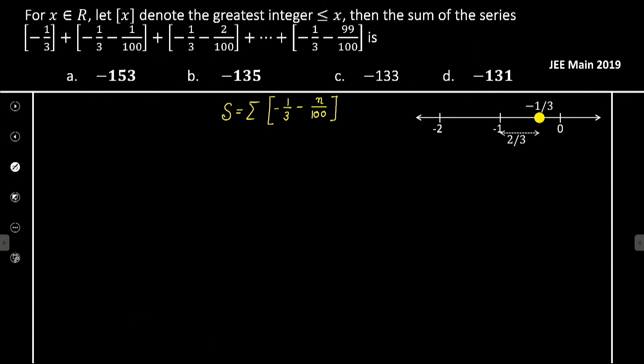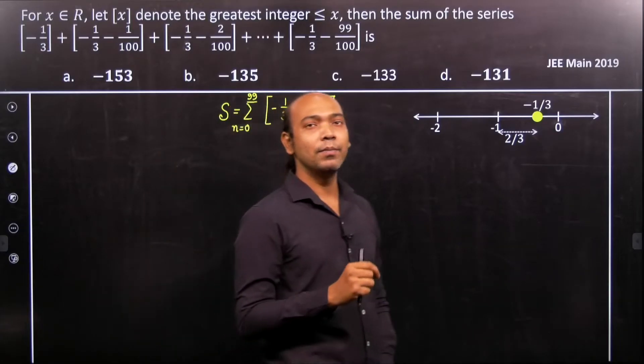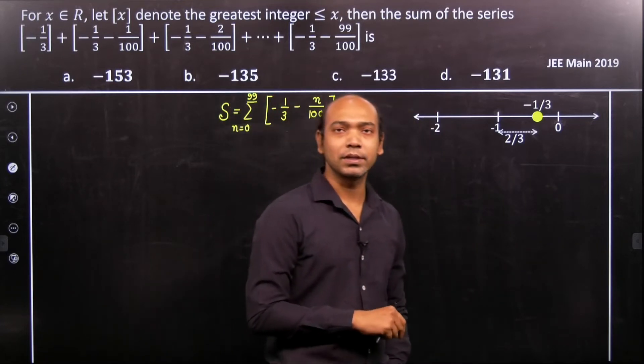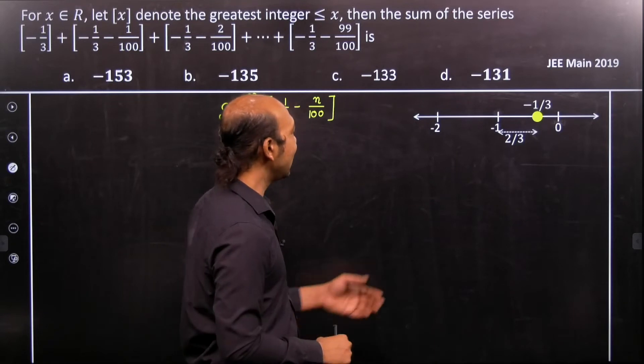And this sum goes from n equals 0 to 99. That's actually the important concept. Obviously there are 100 terms.